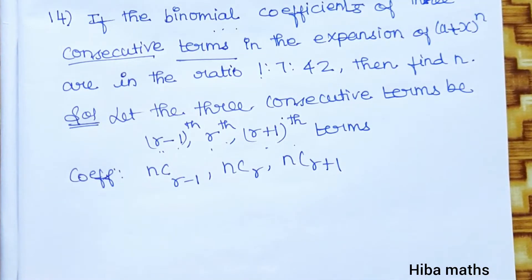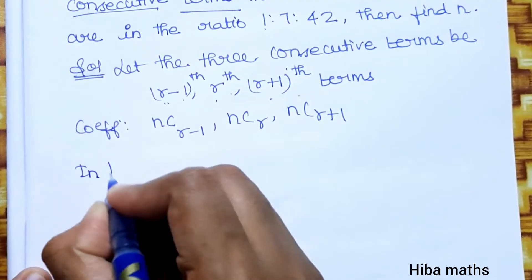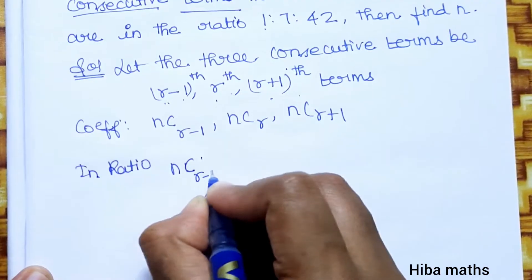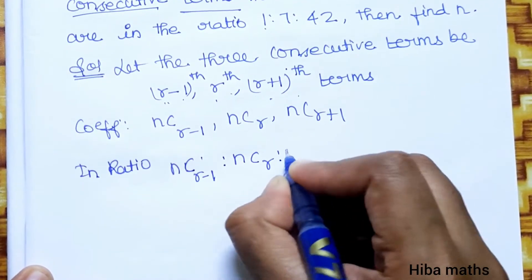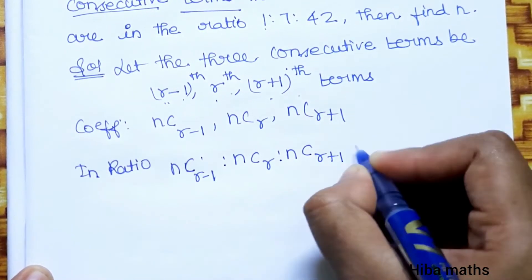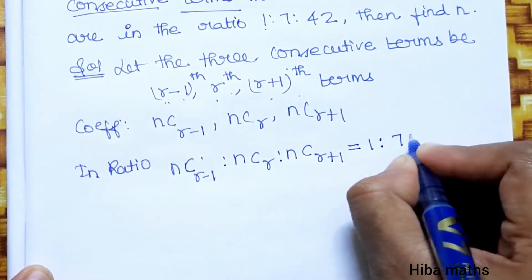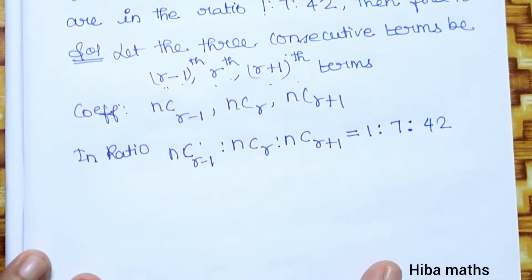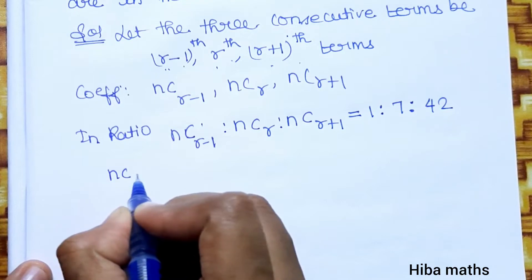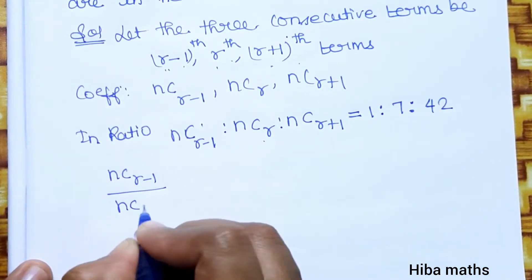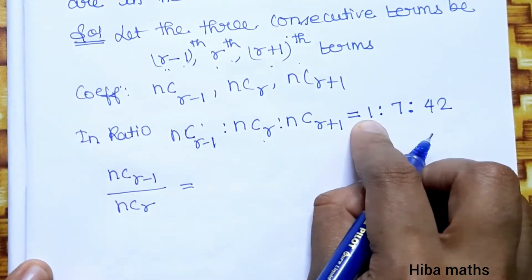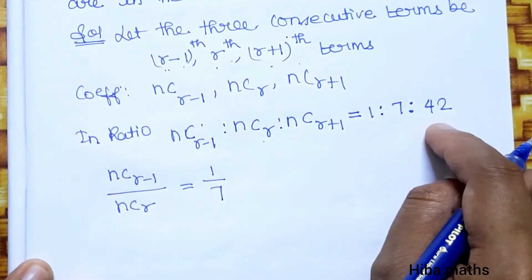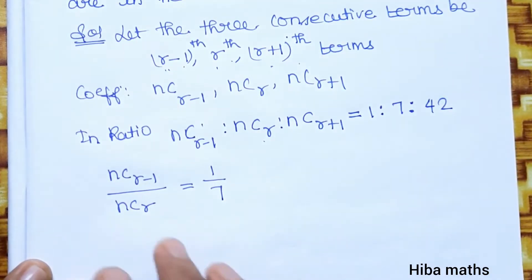The ratio of these coefficients is nCr-1 : nCr : nCr+1 = 1 : 7 : 42. So we set up the first ratio: nCr-1 divided by nCr is equal to 1 by 7.